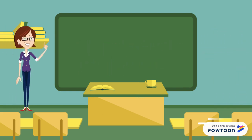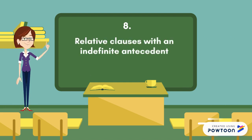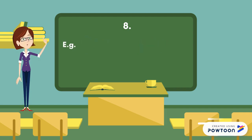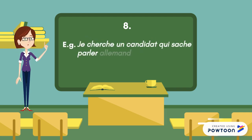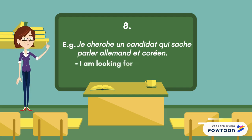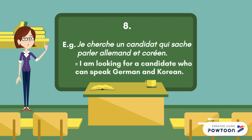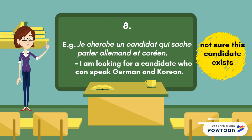The subjunctive is also used in relative clauses with an indefinite antecedent. For instance: 'je cherche un candidat qui sache parler allemand et coréen' — I am looking for a candidate who can speak German and Korean. I am not sure that this candidate actually exists. Otherwise, I would have said 'qui sait parler allemand et coréen.'